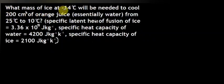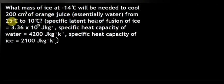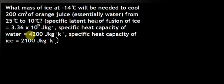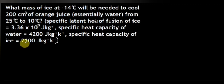What mass of ice at minus 14 degrees centigrade will be needed to cool 200 cm³ of orange juice — essentially water — from 25 degrees centigrade to 10 degrees centigrade? The specific latent heat of fusion of ice is 3.365 × 10⁵ joules per kilogram, specific heat capacity of water is 4200 joules per kilogram per kelvin, and specific heat capacity of ice is 2100 joules per kilogram per kelvin.